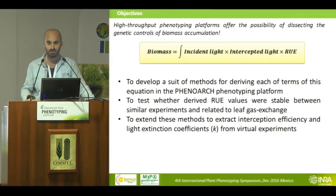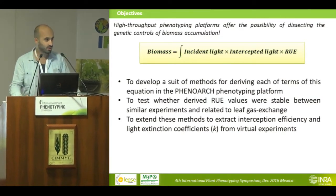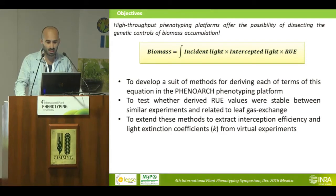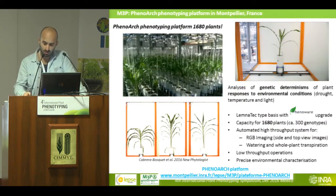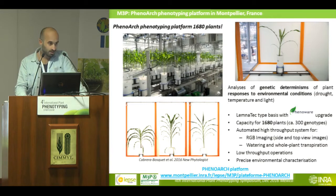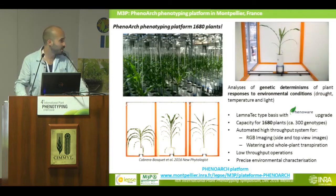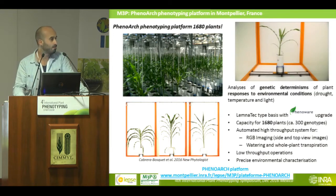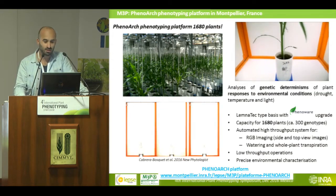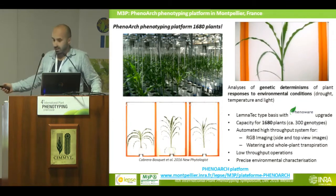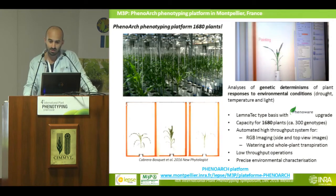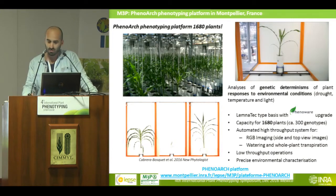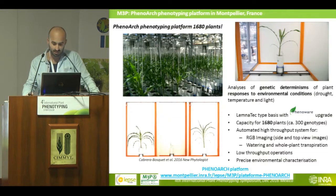We also extended these methods for extracting traits related to light interception, like interception efficiency and extinction coefficients from virtual experiments. PhenoArch is a phenotyping platform that analyzes the genetic determinism of plant responses to environmental conditions, mainly temperature and light. It is an automatic system for acquiring RGB images and controlling plant transpiration, with a capacity of 17,000 plants, compatible with genetic association studies.